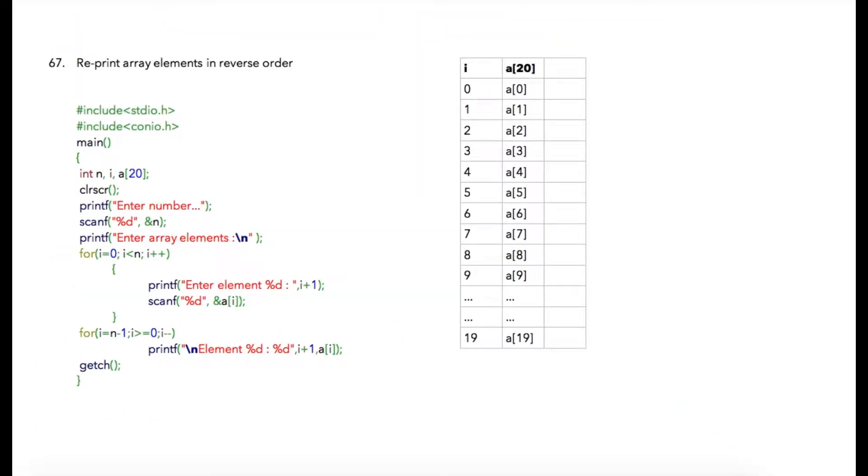In this program we are going to ask user to enter array elements and then we will print these array elements into reverse order. Like the previous program, I am using array element of size 20 and n will denote the number of array elements that user wants to enter.